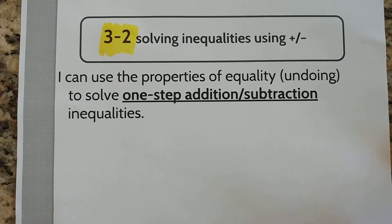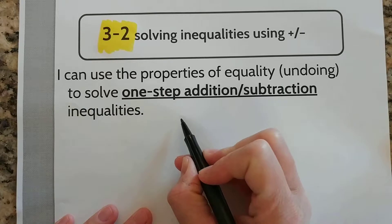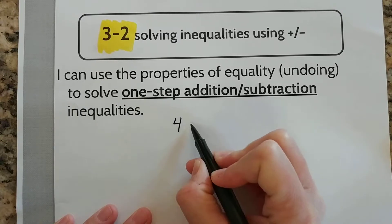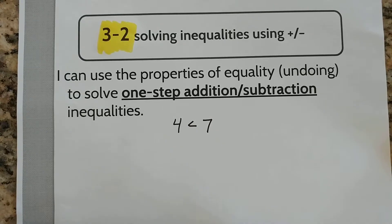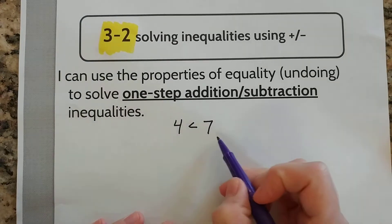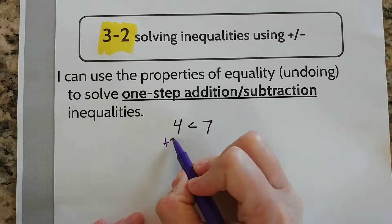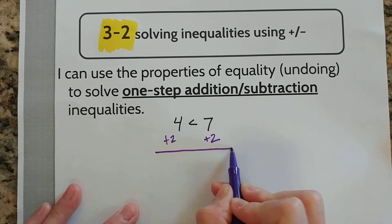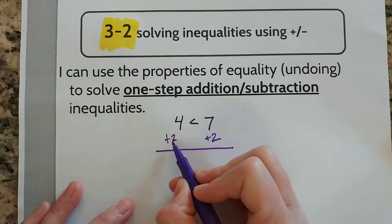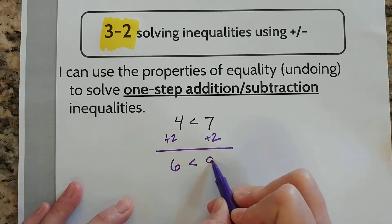Before we get started, I just want to do a little experiment on an inequality. So I'm going to start with an inequality that says 4 is less than 7. And we know that that's true. But what I would like to do is to add a number to both sides of this inequality. Let's just try adding 2. So if I add 2 to both sides of the inequality, it will say 6 is less than 9.